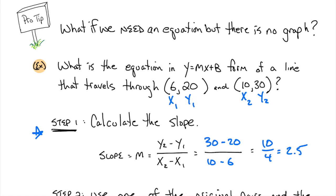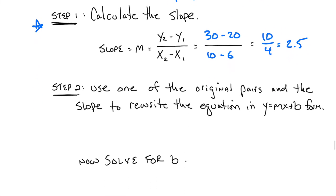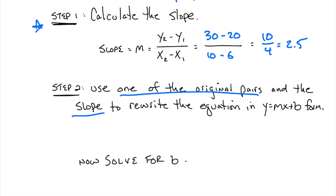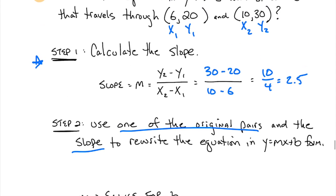I'm going to say 2.5 because that's a nice decimal. You could say 5 over 2 as well. So now we have the slope. Step number two, use one of the original pairs of numbers and the slope to rewrite the equation. So watch what we are going to do.